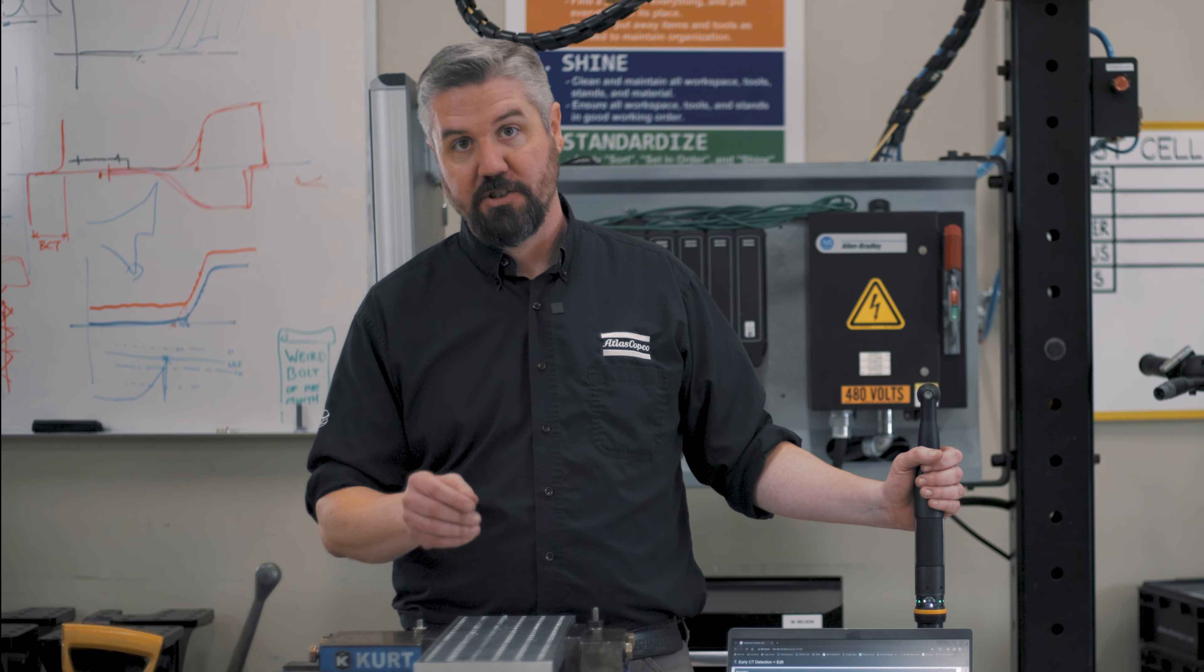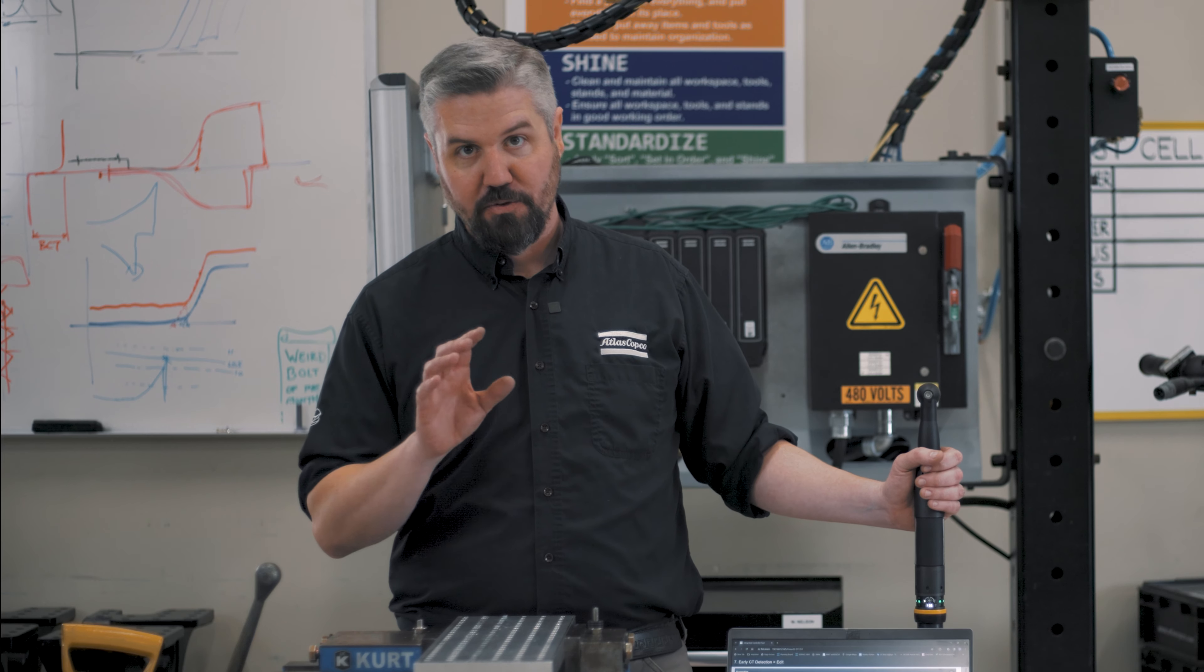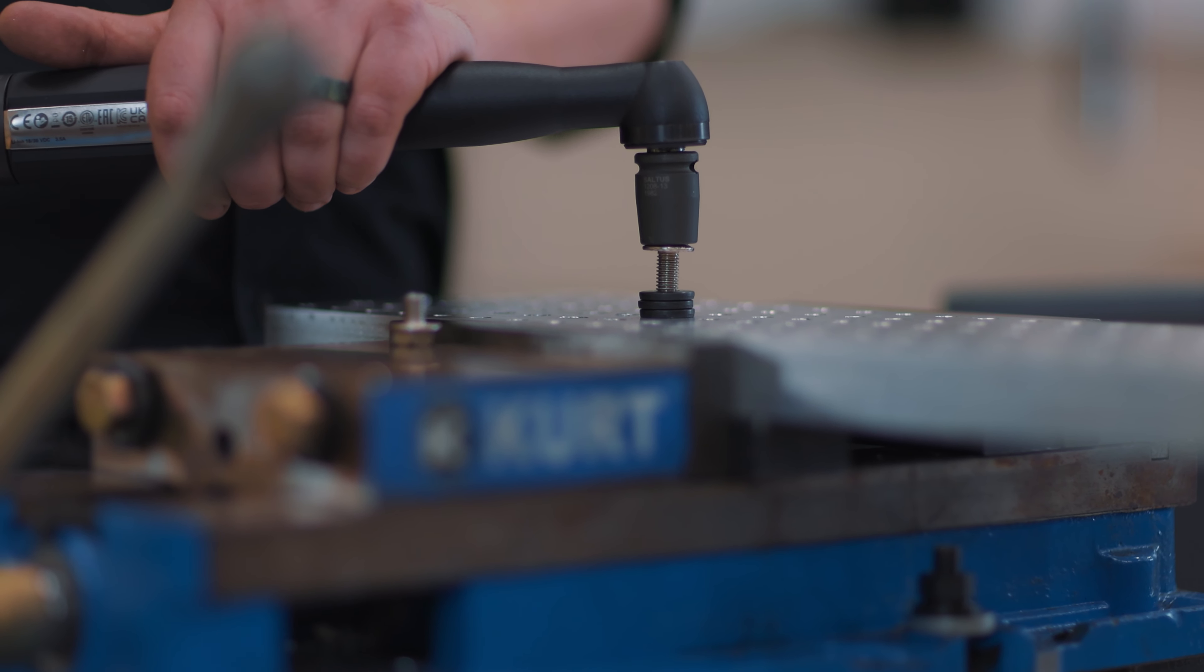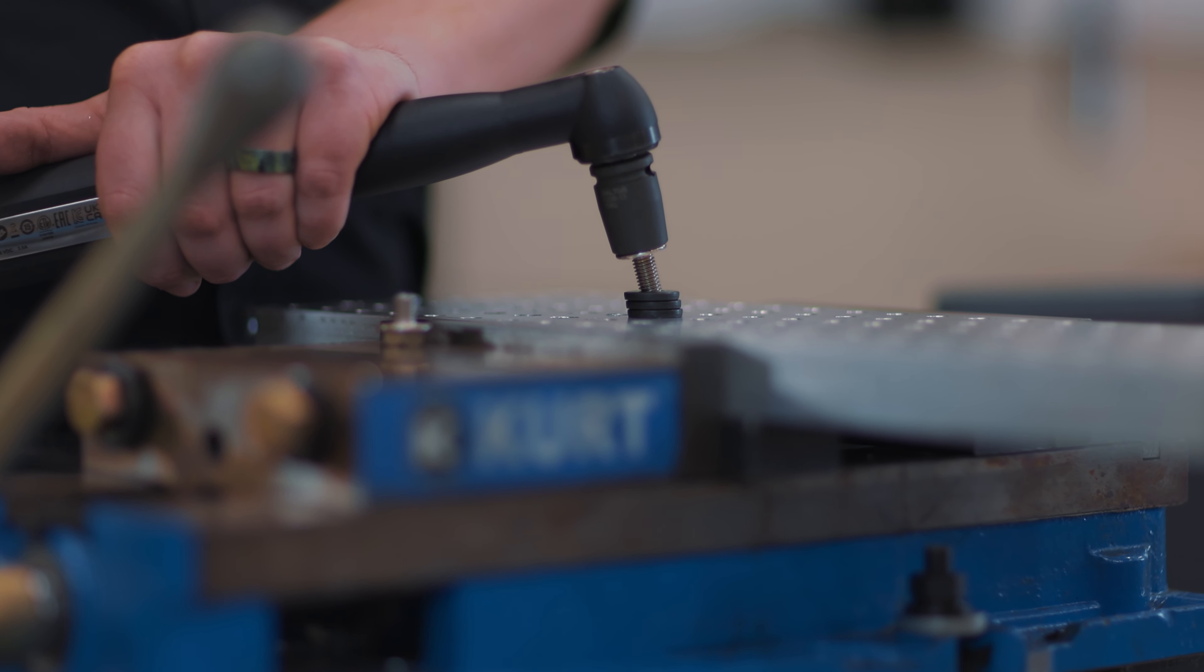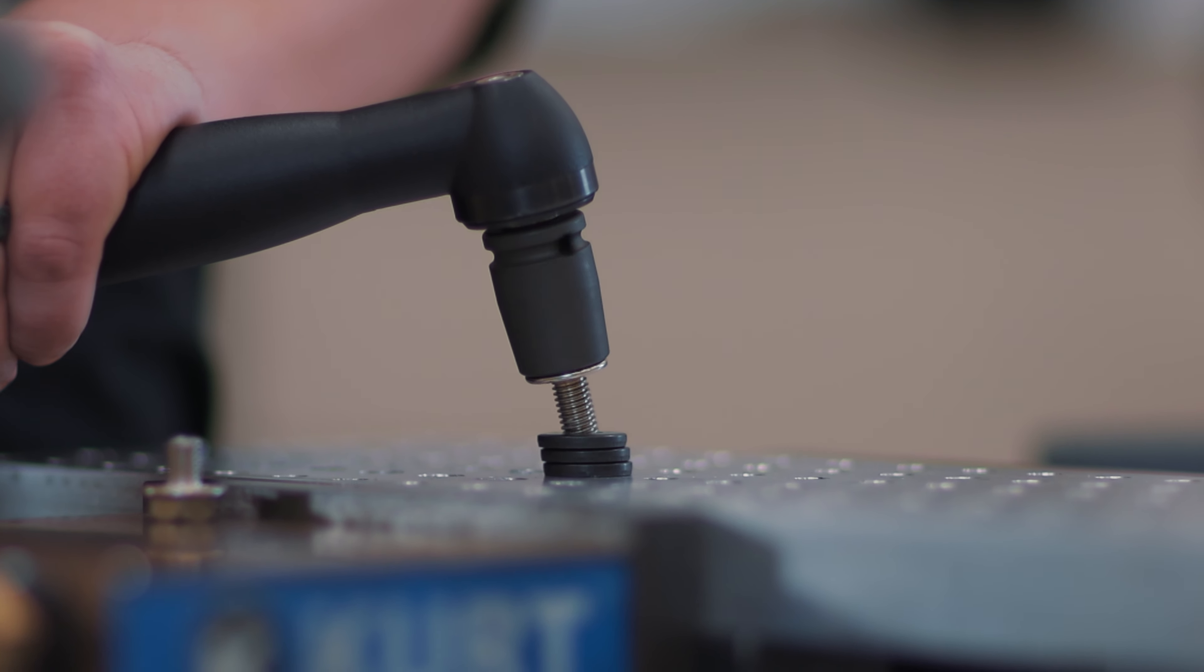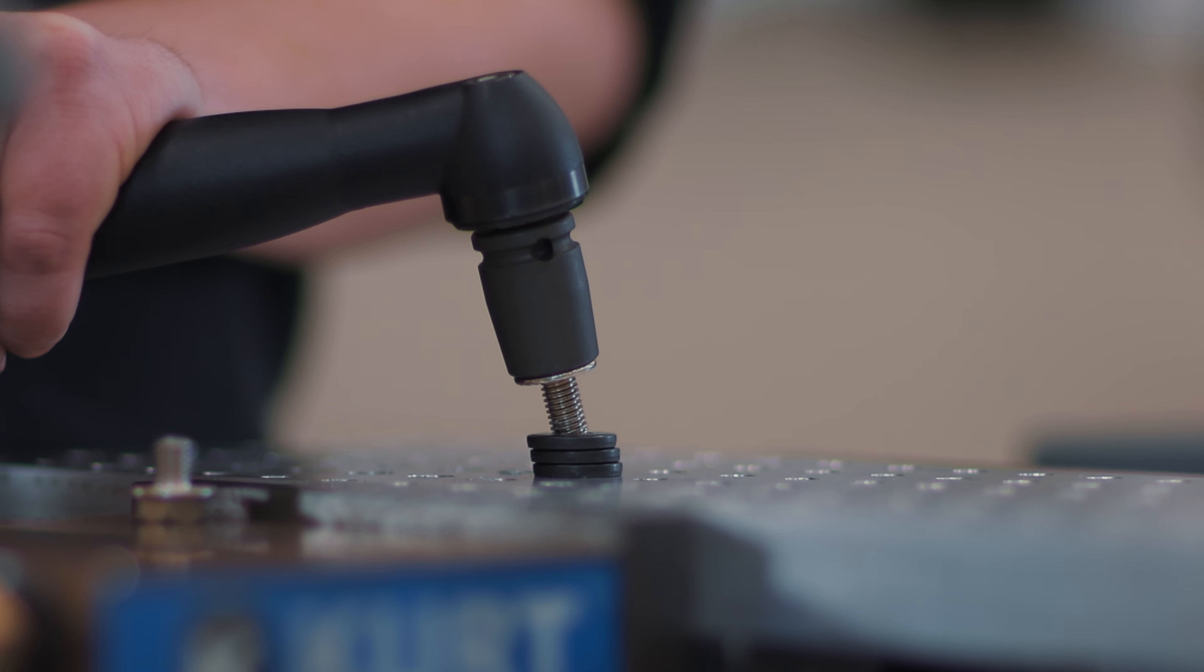So we're going to demonstrate here that we can run this bolt down in a cross thread condition, stop it before it causes the part damage, and then we can back it up, straighten the bolt out, run it down and get a green light with a full torque and clamp load that this bolt needs to do its job and stay tight through its service life. Let's check it out.